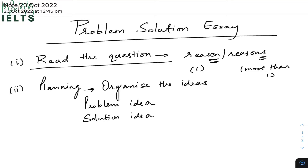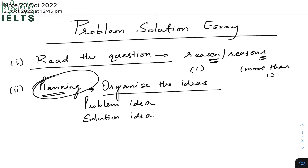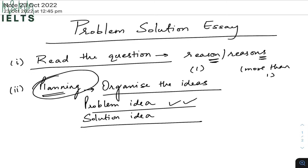The next thing you have to do before you start writing your essay is planning. Planning before you start typing or writing is very crucial — it means organizing your ideas. For a problem-solution essay, you need at least one idea to discuss the problem and one idea to discuss the solution. If they ask for multiple ideas, think of more than one for each. Jot down your ideas first so that when you start writing, you don't need to think about what to write — your ideas are already ready.